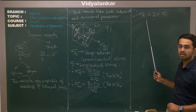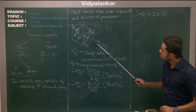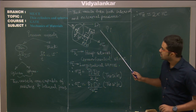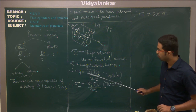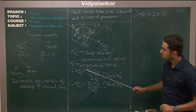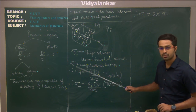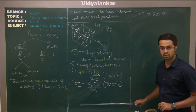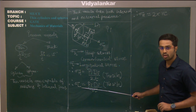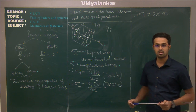What we learned today is that thin cylinders, when subjected to internal pressure, give rise to two stresses — both of which are tensile normal stresses. One is known as hoop stress (or circumferential or diametrical stress) and the other is longitudinal stress. Hoop stress is always double the longitudinal stress in the case of thin cylinders. We will continue the same concepts in the next session.